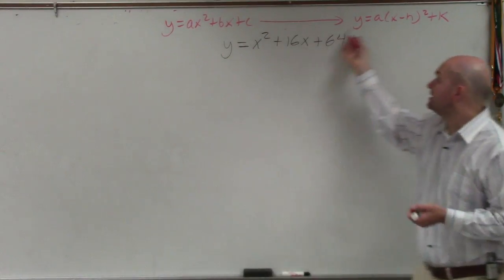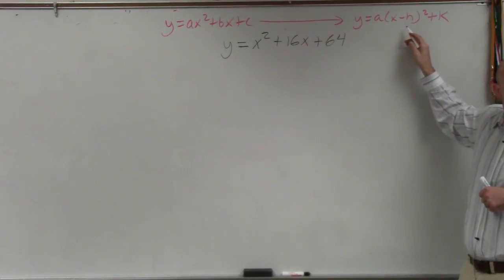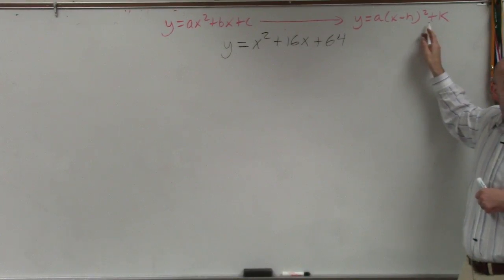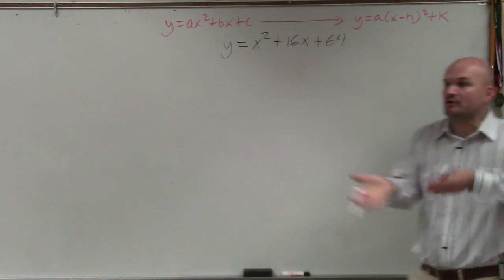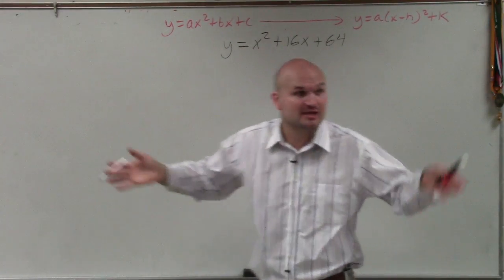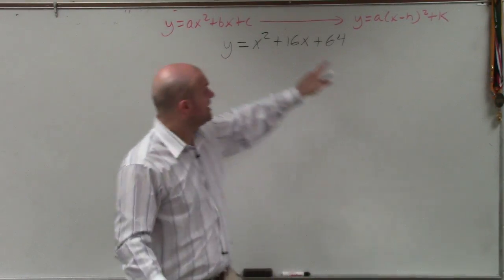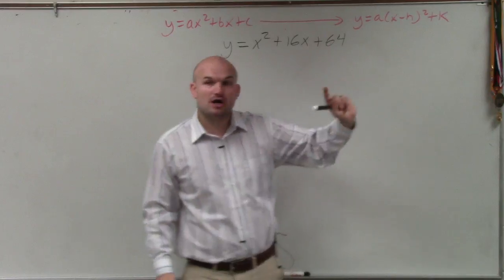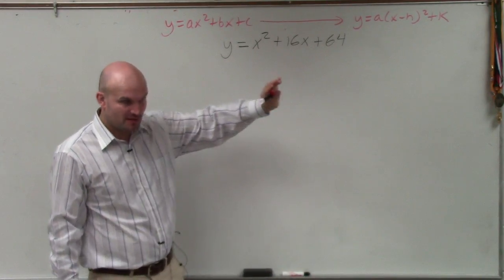The reason why we want to write it in this format is because the vertex is very obvious to identify. The vertex in this case is going to be h comma k. That just tells you where the new vertex is. And then a tells you if the graph opens up, tells you if the graph opens down, tells you if there's a compression or a stretching. So we like it when it's in this format. So one way to graph that we talked about last class period is to complete the square.